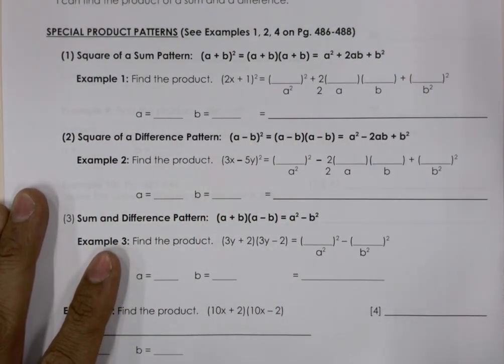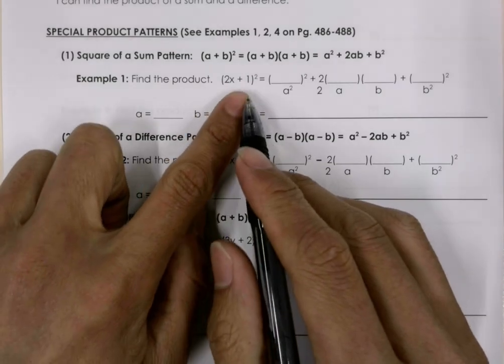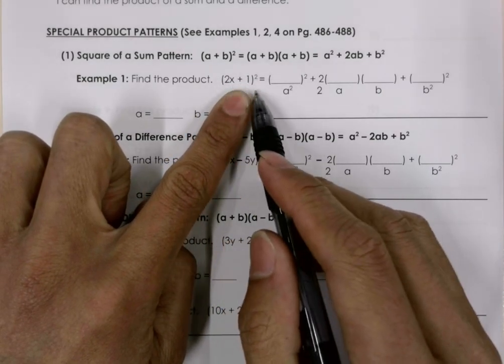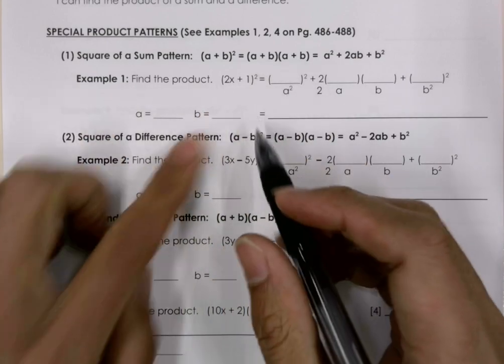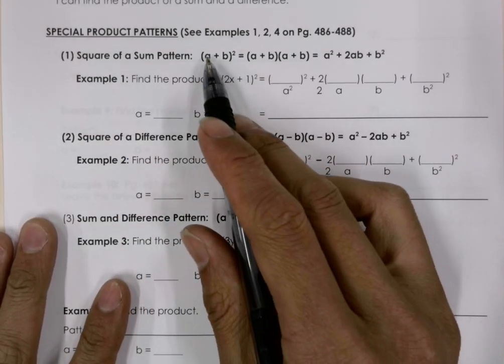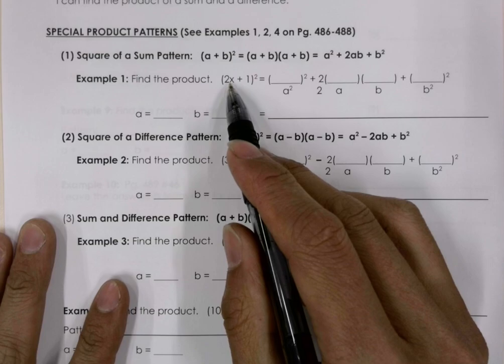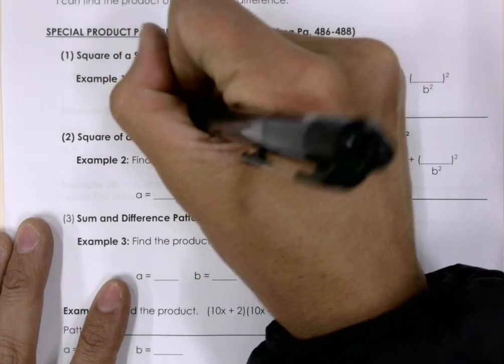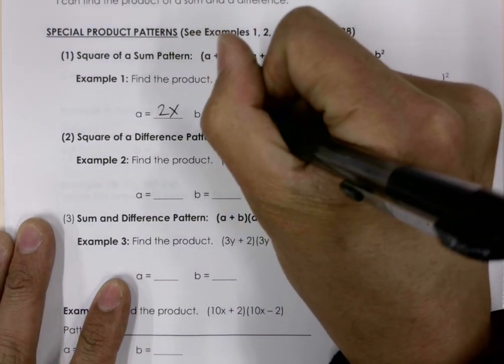So we can do a shortcut here. What we can do is, given this problem, we have two numbers that are added together and we take the square of it. We can identify our a as the first term in the polynomial and our b as the second term. So in this case, our a will be 2x and our b will be 1.